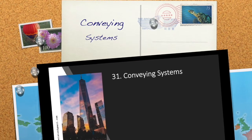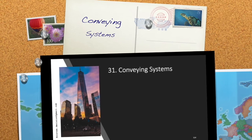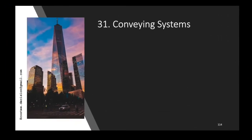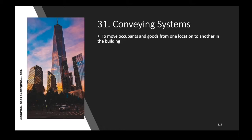Let's look at conveying systems. You can see that building in the picture — the question is how you're going to move from the ground floor to the 153rd floor. A conveying system helps move building occupants and goods from one location to another. For example, if you have mechanical equipment on the roof and need to change a small compressor, you can't install a tower crane — you need to move it from inside the building using a freight elevator.